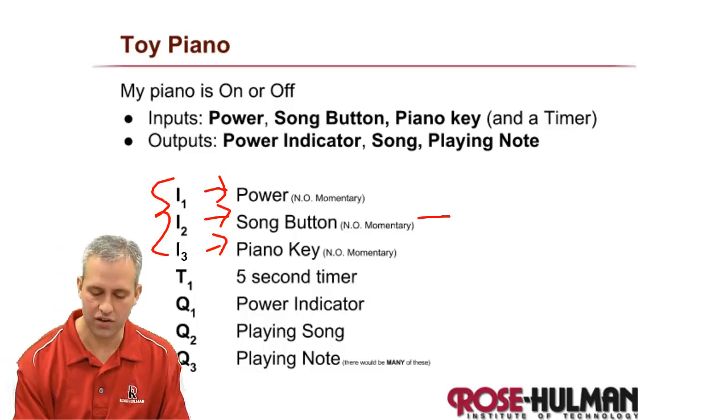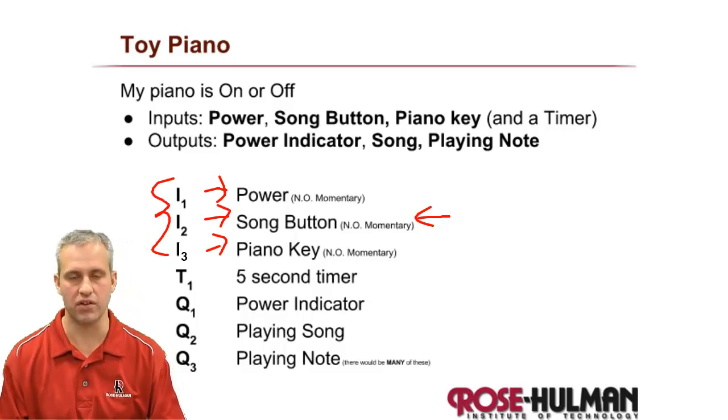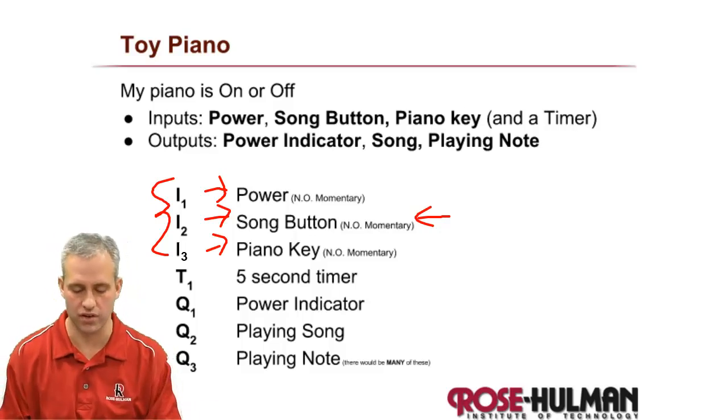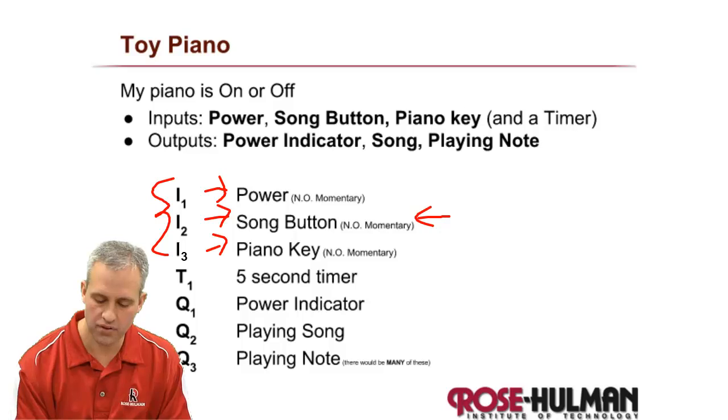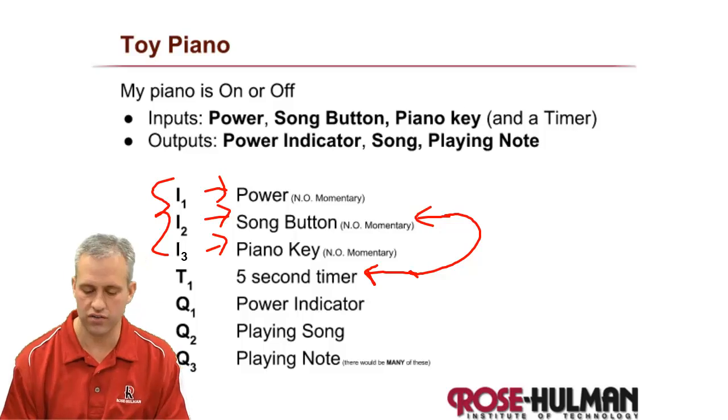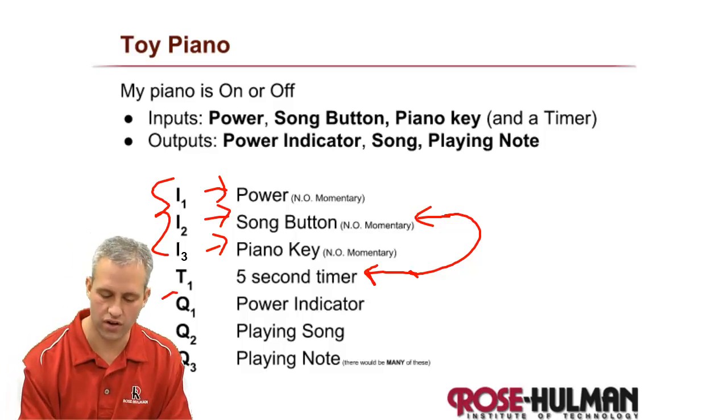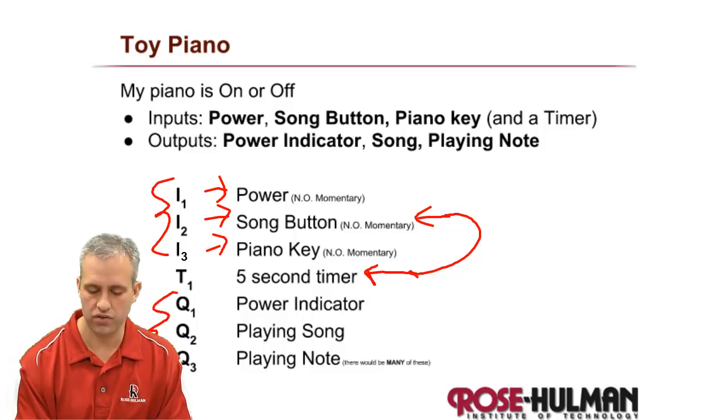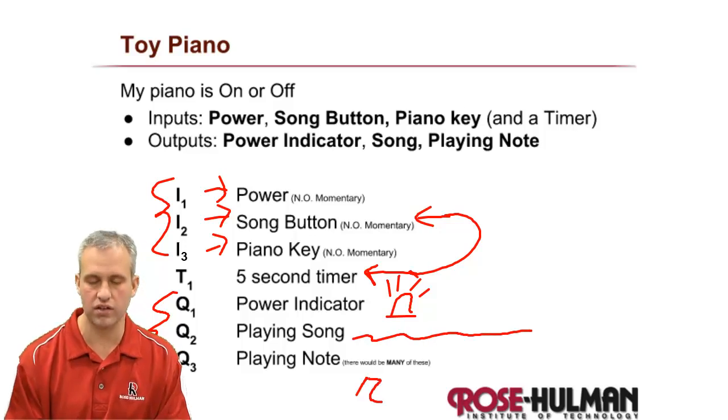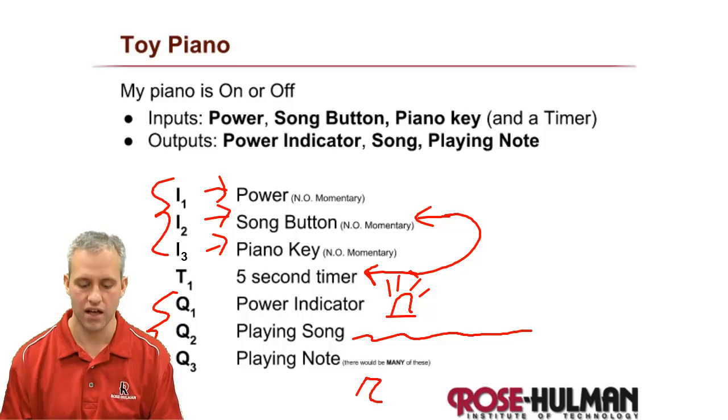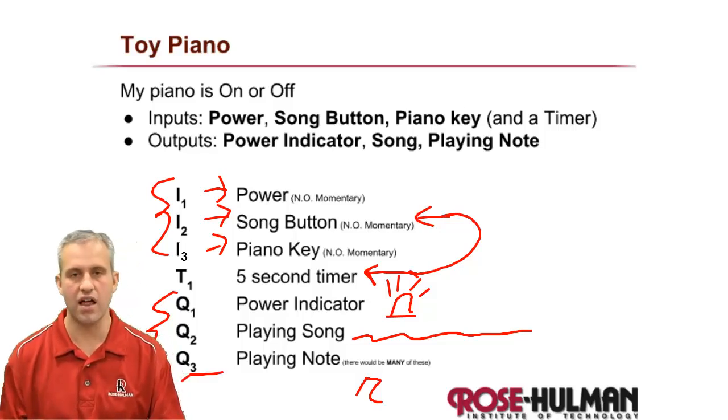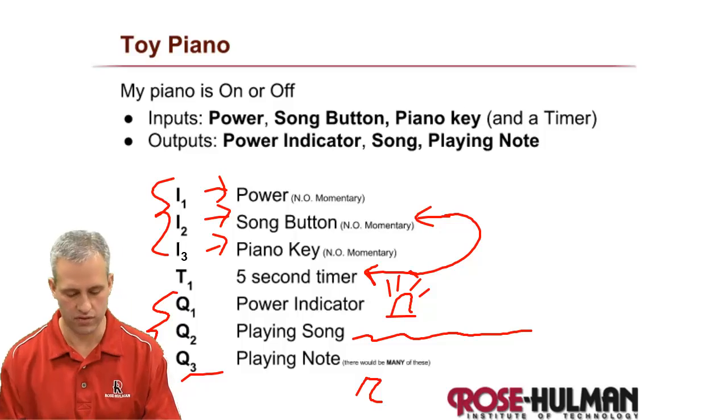Most kids' pianos have this song feature, it's just something you kind of expect. You hit the button and it plays some song. There's going to be a couple timers. I added a five-second timer for the song duration. And then there's three outputs: there's one for like a little power LED, like is this thing in the on state, am I playing the song, or am I playing the single note for that key. Obviously we would need a lot of outputs for the notes, but we only have one piano key for this example.